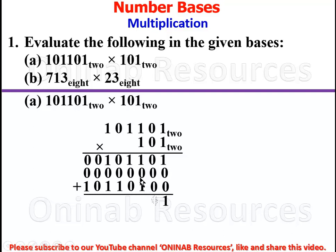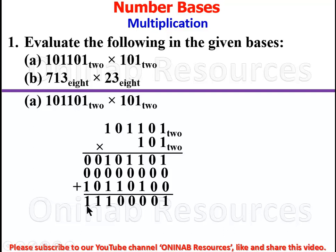Now we add the columns. 1 plus 0 plus 0 gives 1. Moving along, 0 plus 1 gives 1. Then 1 plus 1 gives 2; since 2 is base 10, we convert: 2 divided by 2 gives 1 remainder 0, write 0 carry 1. Continuing carries through the columns, we arrive at the result: 101110001 base two.